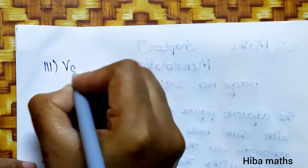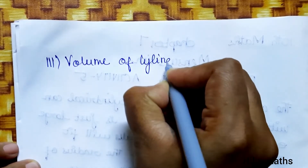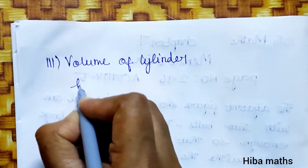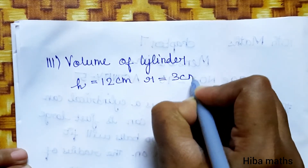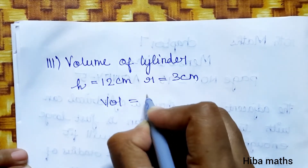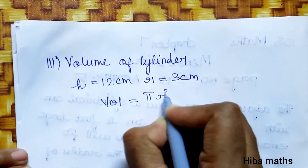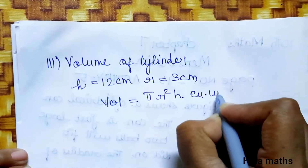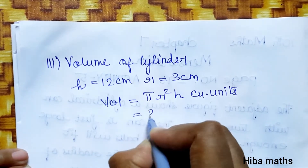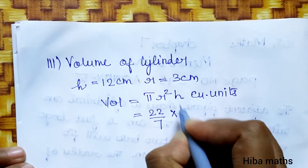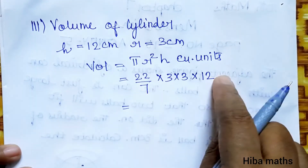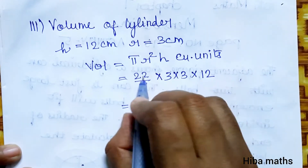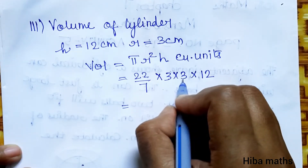Third question: volume of cylinder. Height = 12 cm, radius = 3 cm. Volume of cylinder = π r² h cubic units. Using π = 22/7, r² = 3 × 3, height = 12. We multiply: 22 × 3 = 66, 66 × 3 = 198.